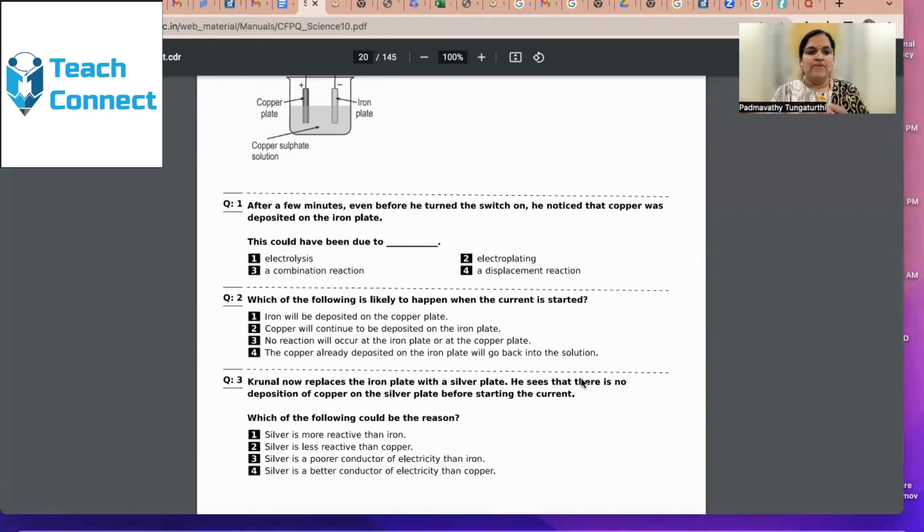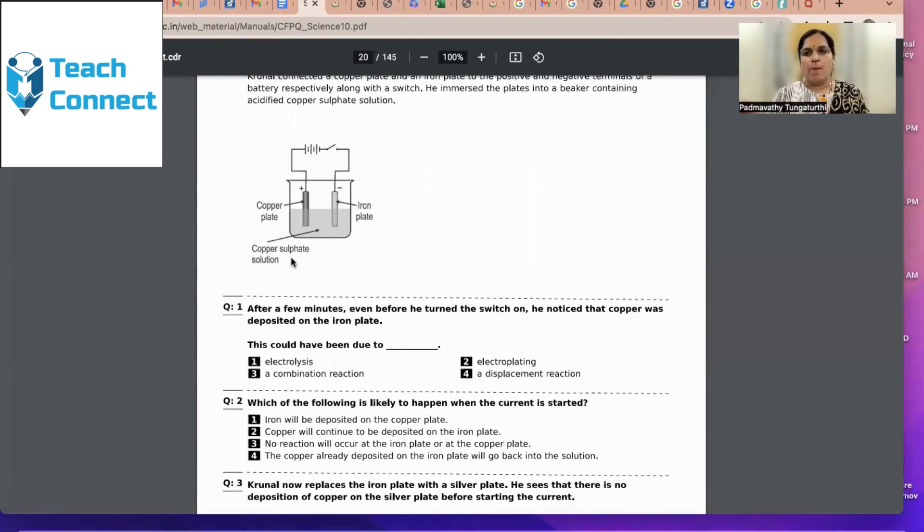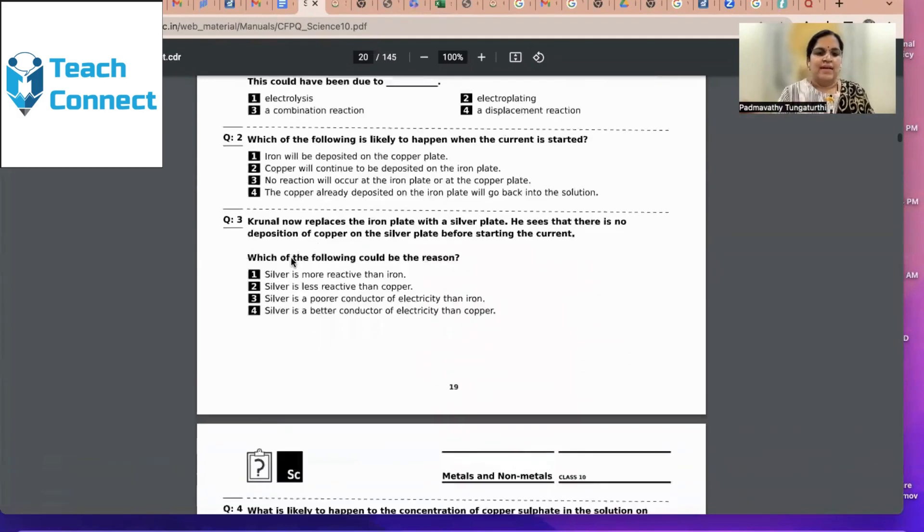This is how children have to run thoroughly the reactivity series. All elements above hydrogen, which are the elements below hydrogen, and how the elements can displace. The teacher has to give a clear idea. Then definitely, students will be able to do a good job in writing all the questions correctly for chapter 3. Now, if we take these questions, that means iron can displace copper from copper sulfate.